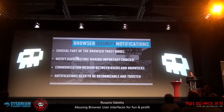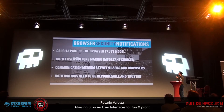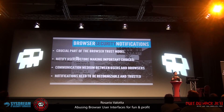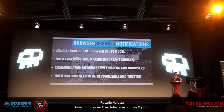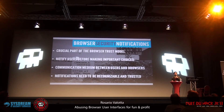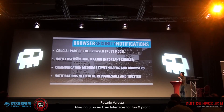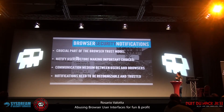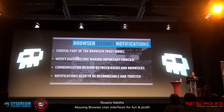One of the most important pieces of the Chrome component are browser security notifications. Every time you browse to a site, you trust your browser and the notifications it provides. Think about when you browse an SSL-protected website and the notifications that appear when the certificate is not valid. Security notifications are a crucial part of the browser trust model — they notify users before making important choices and act as a communication medium between the user and the browser.